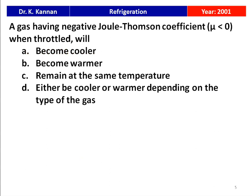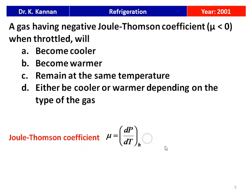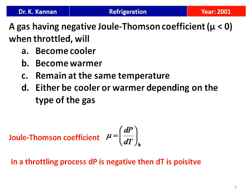The next question: a gas having a negative Joule-Thompson coefficient (mu less than 0), when throttled, will become cooler, warmer, remain at the same temperature, or either cooler or warmer depending on the type of gas. The Joule-Thompson coefficient is given by mu equal to dP/dT at constant enthalpy. When mu is less than 0 in a throttling process, dP is negative and dT is positive — pressure decreases through the throttling device, so temperature increases and the fluid becomes warmer.